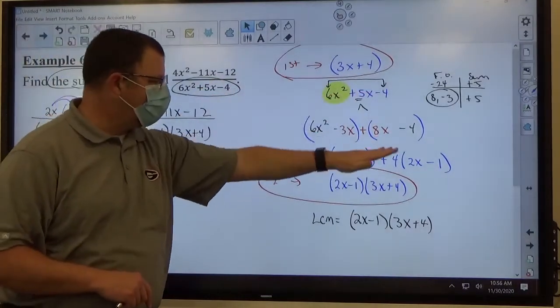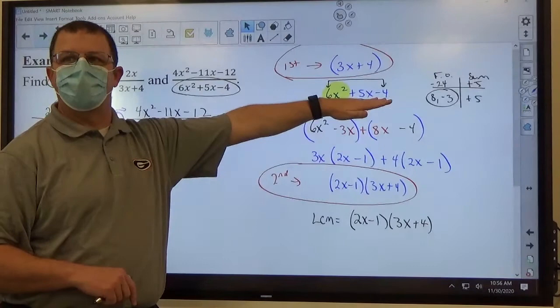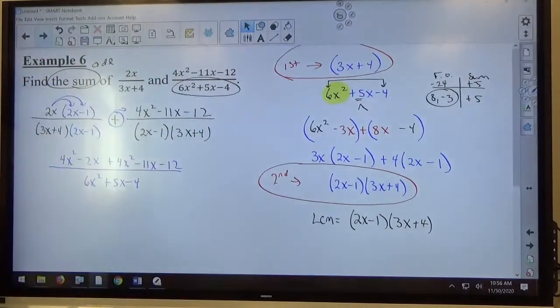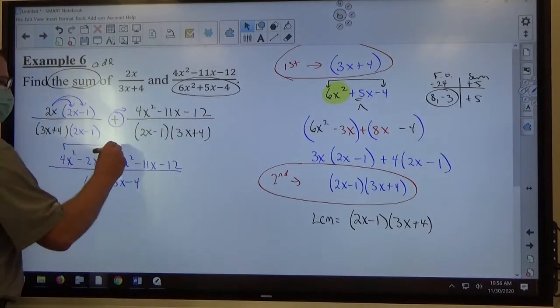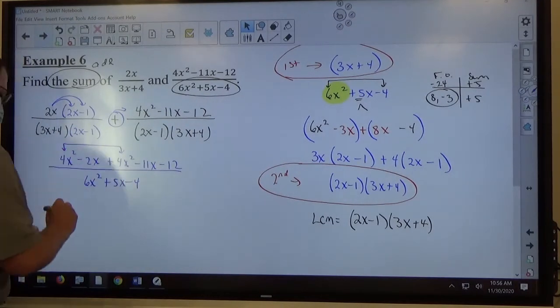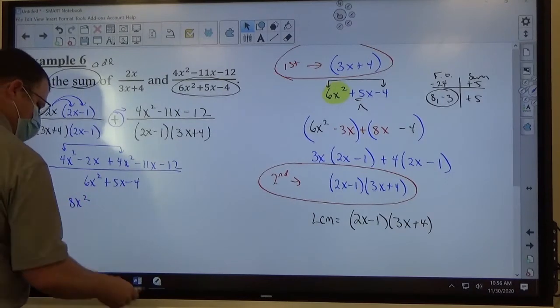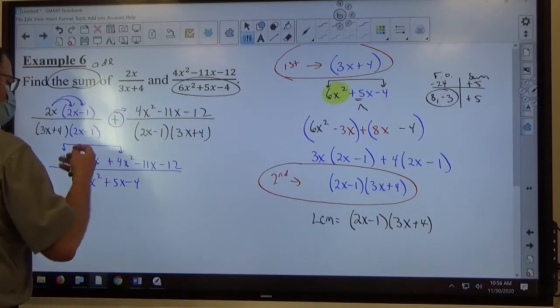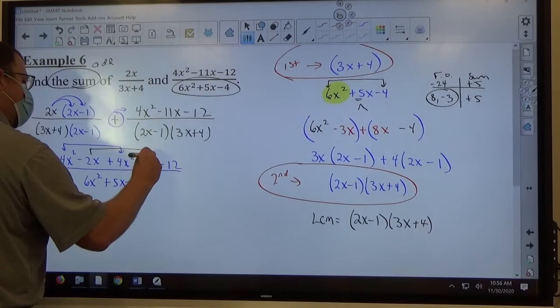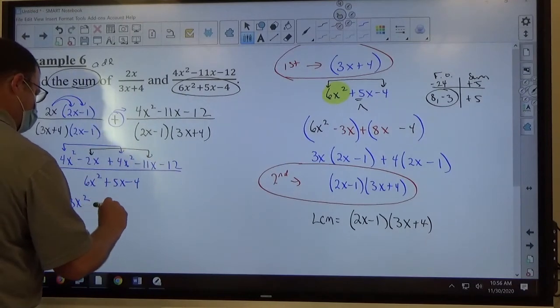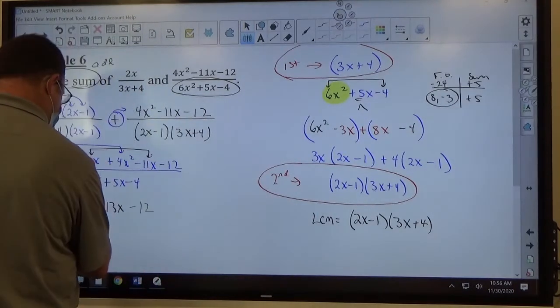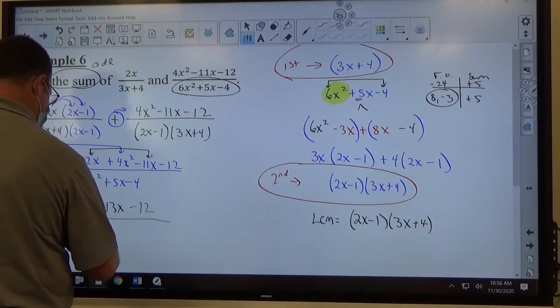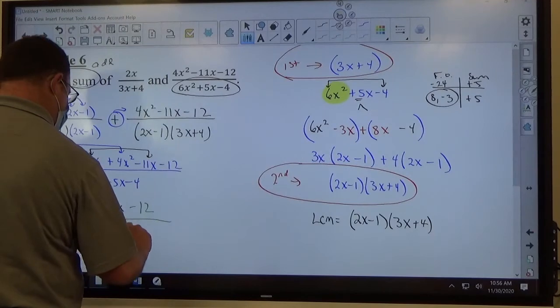I've already broken it down. I don't have to multiply it back together to figure out what it used to be. All that's left is combine like terms on top. 4x² and 4x² are both positive, make 8x². -2x and -11x, both negative, add to make -13x. And then I've got -12 all by itself, no other constants on top, all over 6x² + 5x - 4.